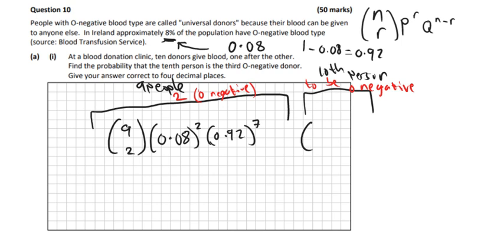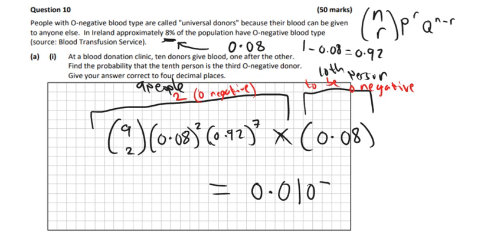So that's the probability that 2 of the first 9 chosen are O-. And then you must multiply that by the probability that just the 10th person is O-. So the probability that one person is O- is just 0.08. So you're multiplying all of those things by each other: 9 choose 2, 0.08 to the power of 2, 0.92 to the power of 7, and 0.08. When you put that in the calculator you should get 0.0103, to 4 decimal places. So that's it for the first part.